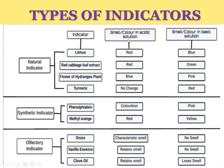Red cabbage leaf extract turns red in acidic solution and green in basic solution. The flower of the hydrangea plant is blue in acidic solution and pink in basic solution. Turmeric shows no change in acidic solution but turns red in basic solution. For synthetic indicators: phenolphthalein is colorless in acidic solution and becomes pink in basic solution; methyl orange is red in acidic solution and blue in basic solution.